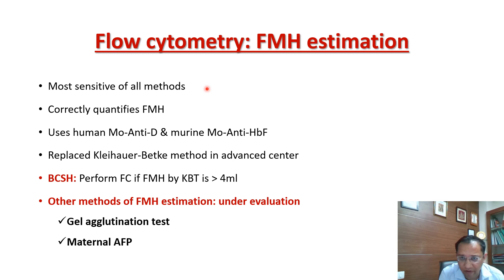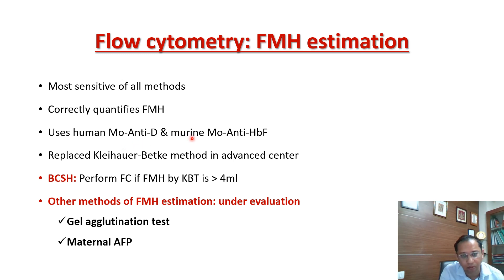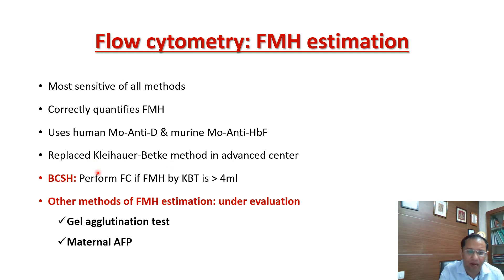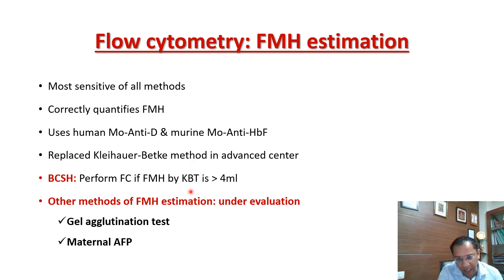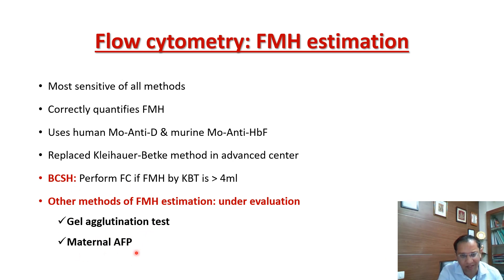Flow cytometry is the most sensitive quantitative method for FMH estimation. It correctly quantifies FMH using human monoclonal anti-D and murine monoclonal anti-HbF. Many advanced centres have replaced the KB test with flow cytometry, but KB test is fairly accurate and adding one extra vial compensates for its limitations. BCSH guidelines recommend flow cytometry if FMH is suspected or the KB test result is greater than 4 mL. Other methods under evaluation include gel agglutination and maternal AFP.